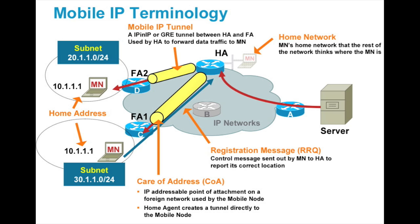Mobile IP allows the node to change locations and traverse the internet, but remain addressable via their home network. The care-of address will change when the node travels to a network outside its home network, indicating a network number which identifies the mobile node's point of attachment with respect to the network topology. The home address gives a mobile node the ability to appear connected to the home network, assisted by a network node known as the home agent. The principal job of the home agent is to receive data packets intended for the mobile node and deliver them without interruption to the current location of the mobile node.